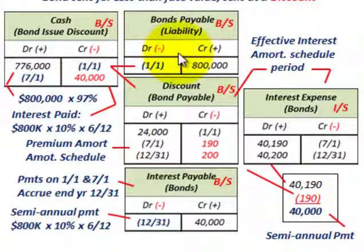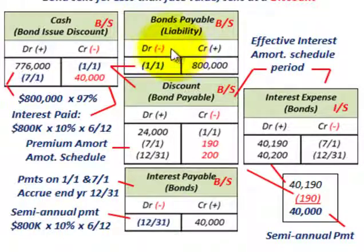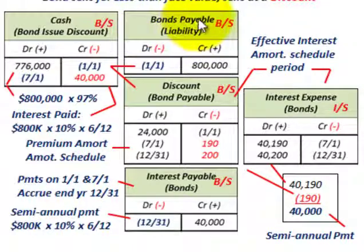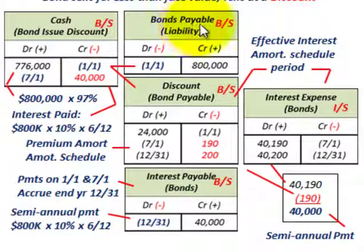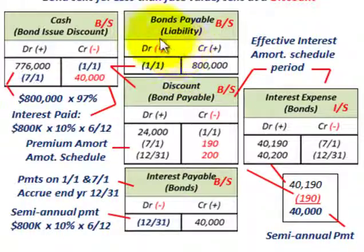We've gone through a discount on bonds payable. We learned how to calculate the effective interest rate using a financial calculator or Excel function. We also went through determining the issue price on a bond using the present value function — discounting both the payments on the bonds and the bond's face or maturity value. That covers calculating our bond discount, the effective interest rate, and interest expense on the bond.